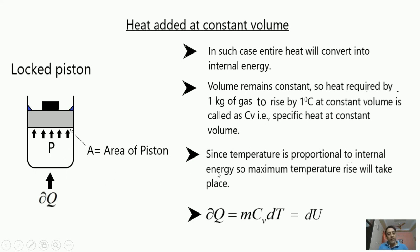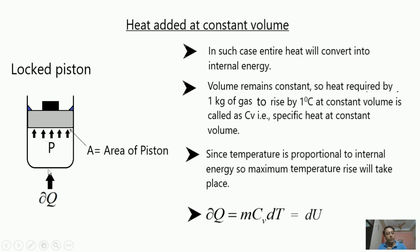Temperature is proportional to internal energy, as already discussed. At constant volume, maximum temperature rise takes place because whatever heat we give to the system, energy is conserved — it can neither be created nor destroyed. So the entire heat energy is invested purely in raising the internal energy of the system, and since temperature is proportional to internal energy, maximum temperature rise occurs. The formula here is dQ = m·Cv·dT, and this heat equals the internal energy change of the system.